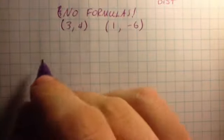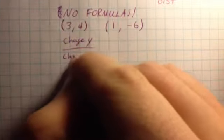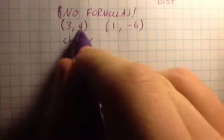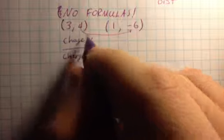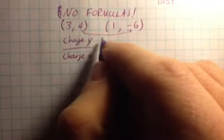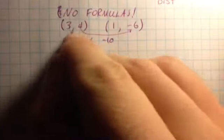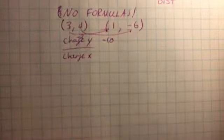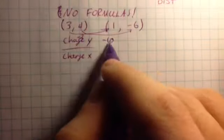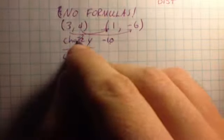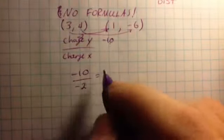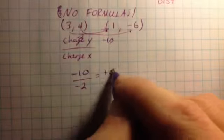I'm going to use change in y over change in x. From 4 to negative 6, it looks like I'm going down by 10. From 3 to 1, I'm decreasing by 2. So my change in y was negative 10, my change in x was negative 2, and that simplifies to 5. There's my slope.